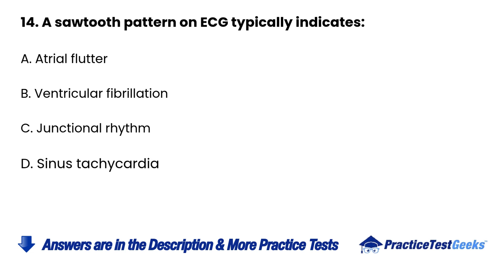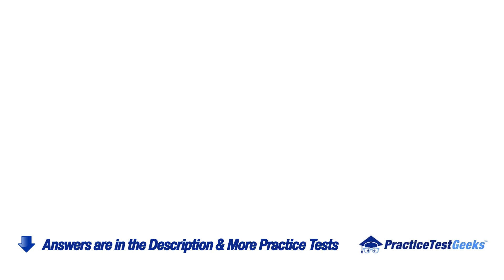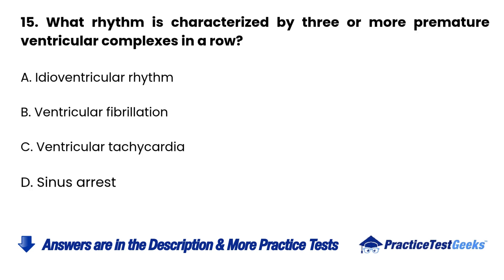14. A sawtooth pattern on ECG typically indicates: A. Atrial flutter. B. Ventricular fibrillation. C. Junctional rhythm. D. Sinus tachycardia.